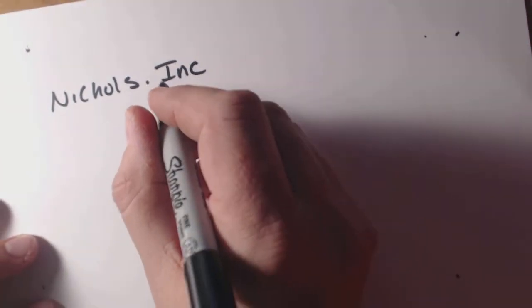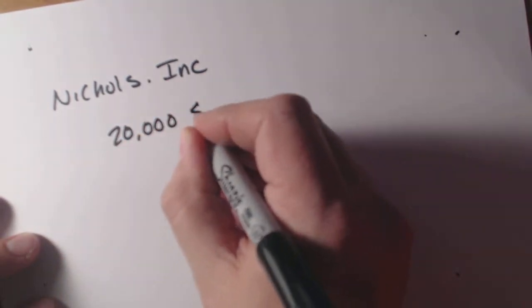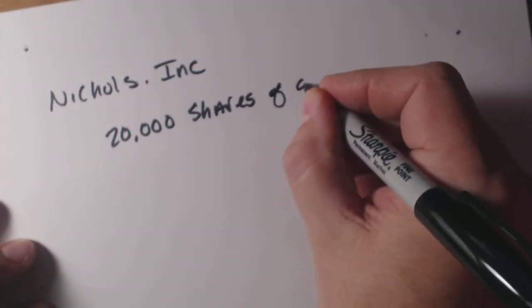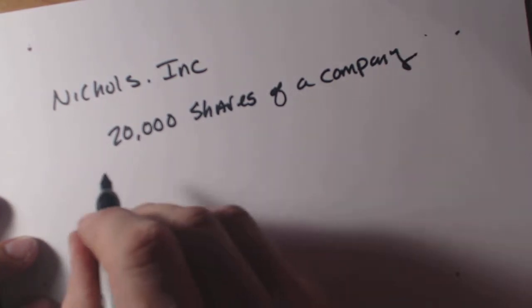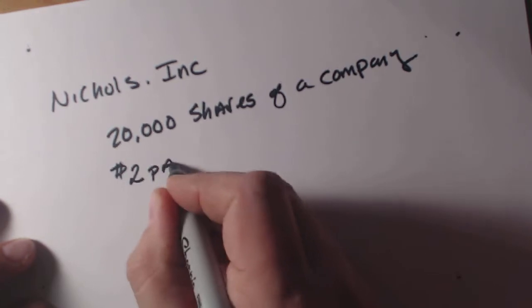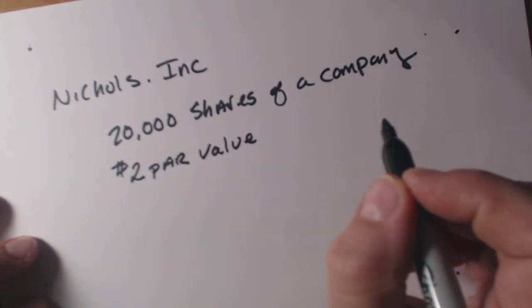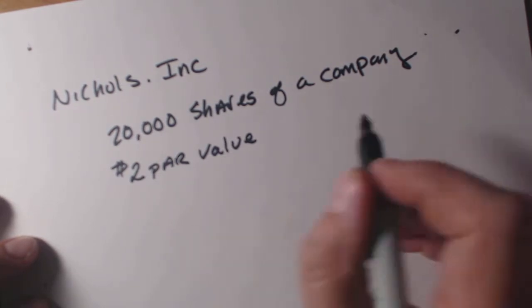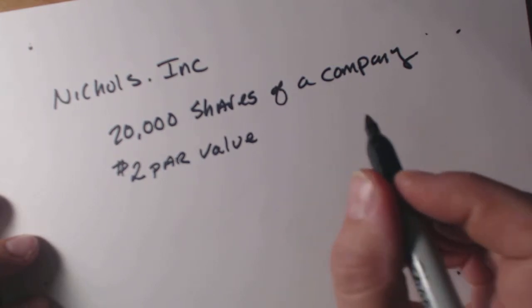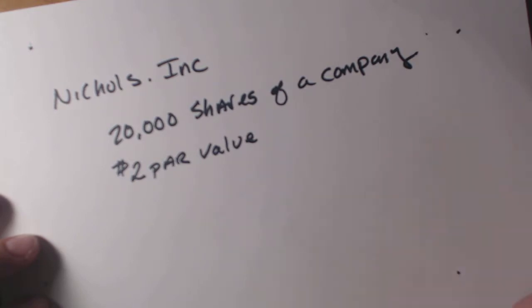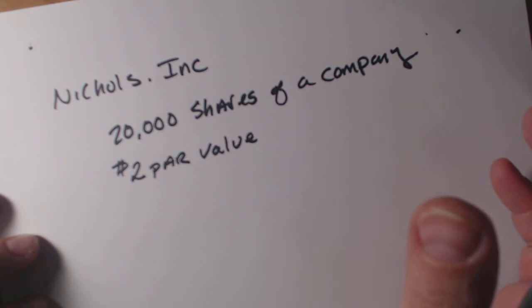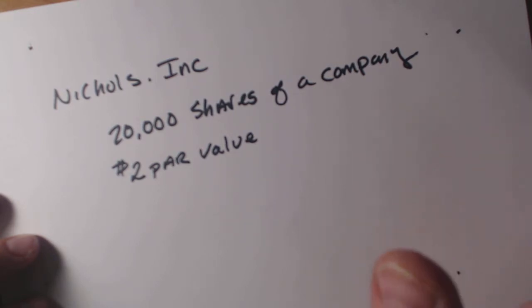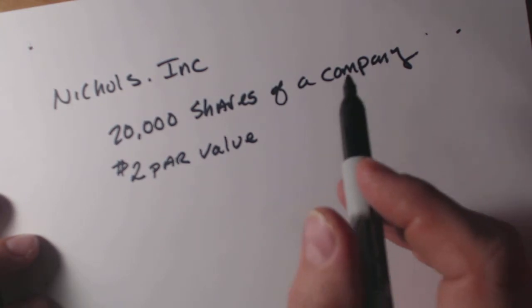First of all, we're going to look at some stock. Here are our basic guidelines: we have a company — let's call this company Nichols Inc. Nichols Inc started with a sale of 20,000 shares. This is kind of a startup. There are a handful of owners. When they started the company, they created something called a par value. A par value is an arbitrary number that somebody assigns — it could be one, two, ten, or fifteen, whatever the owners feel is a good number. This company started with a $2 par value.